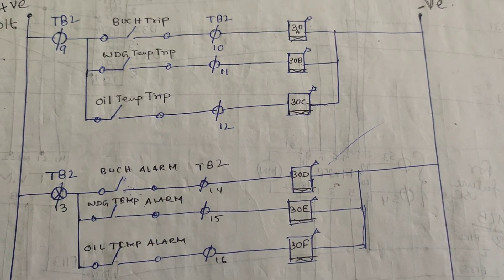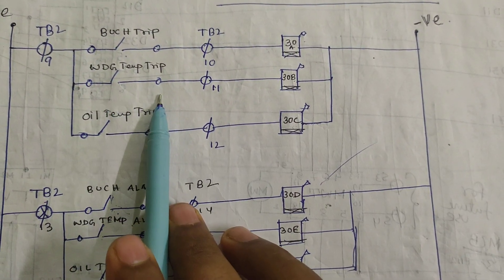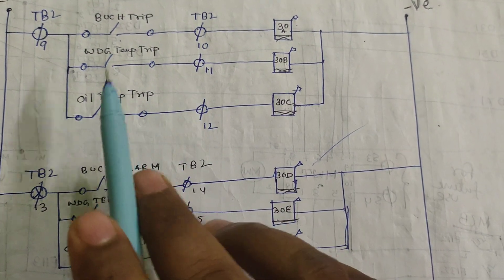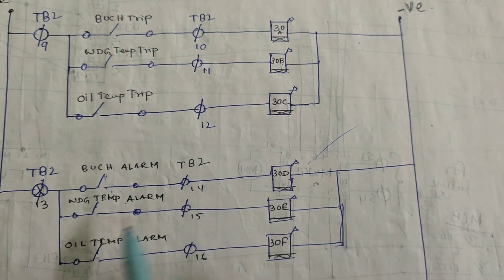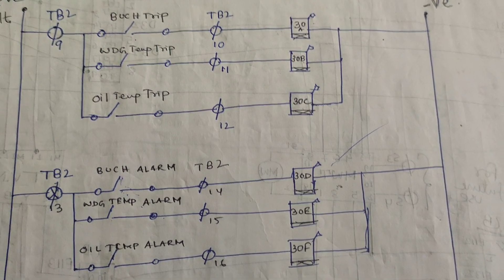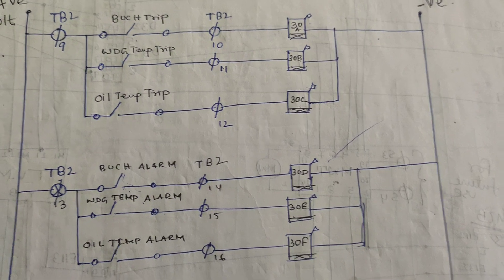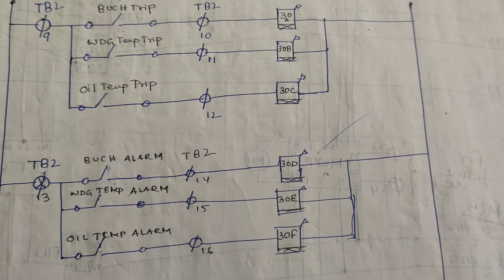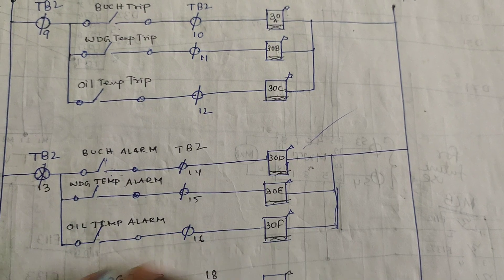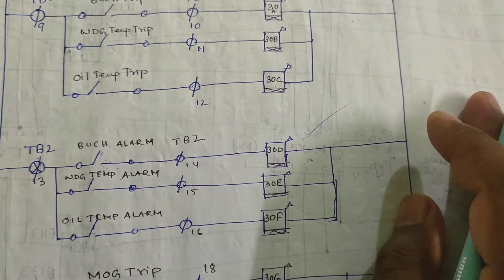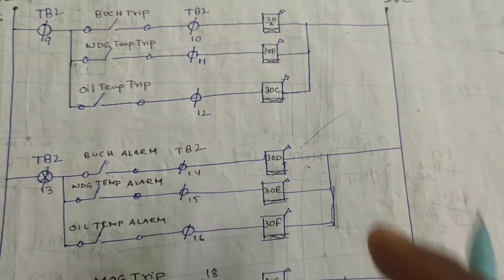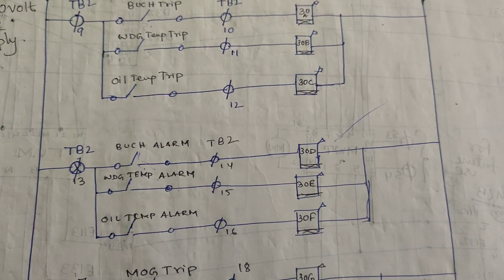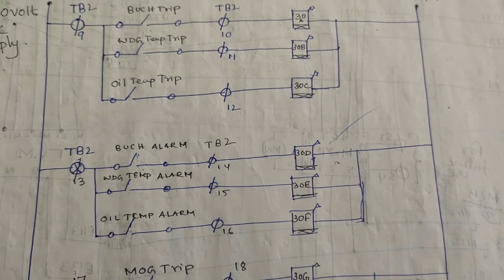The winding temperature trip and alarm work on temperature differences. If winding temperature reaches 75°C, the alarm activates; if it reaches 85°C, the trip activates — indicating something wrong inside the transformer. For oil temperature: the alarm typically activates at 85°C and the trip at 95°C. These are predefined values that vary by manufacturer.